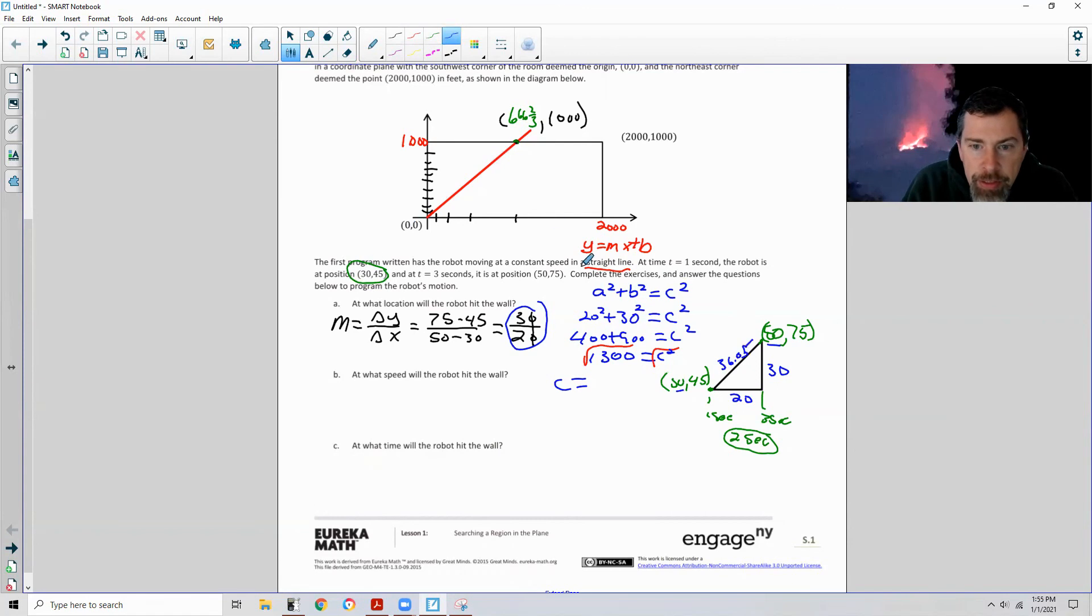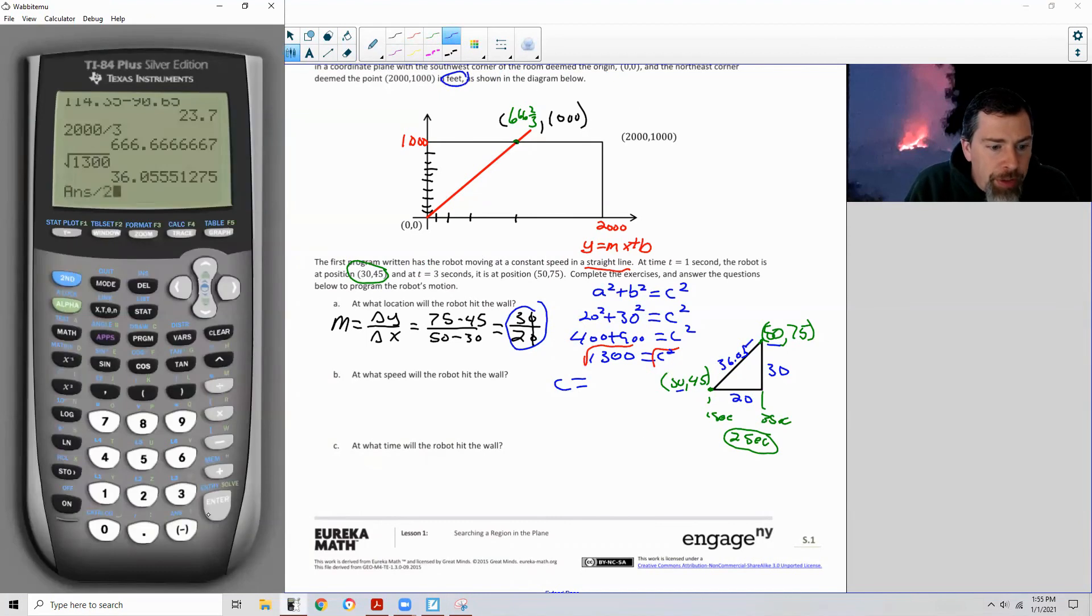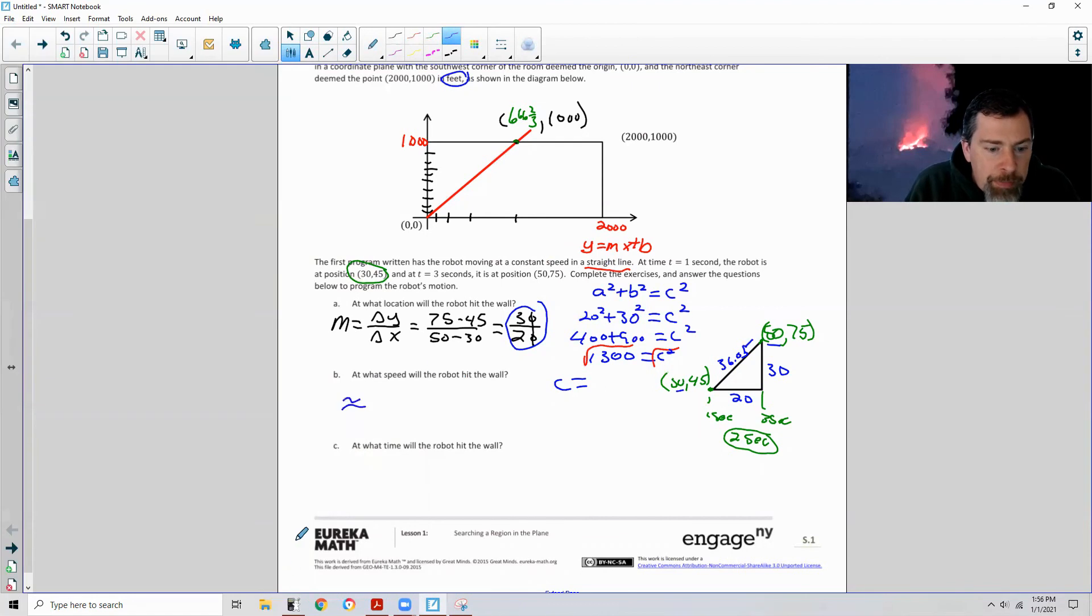So this is 36.05. And these distances, it says feet. So this is 36 feet in two seconds. So 36.05 divided by two will give us how fast it was going per second. So at what speed will the robot hit the wall? At approximately 18 feet per second.